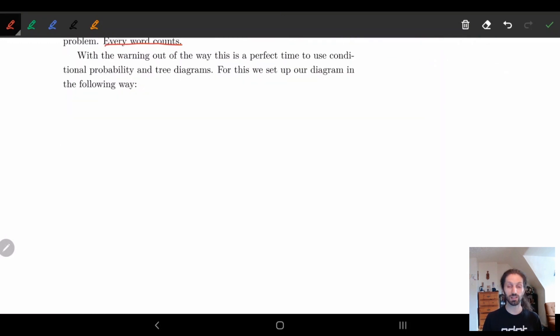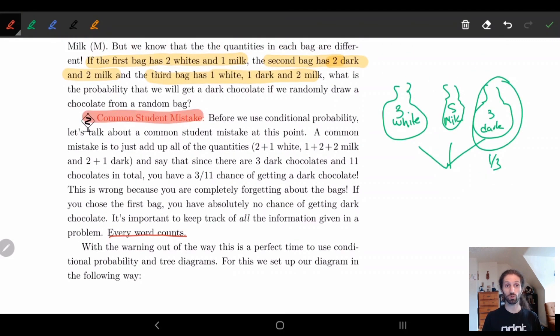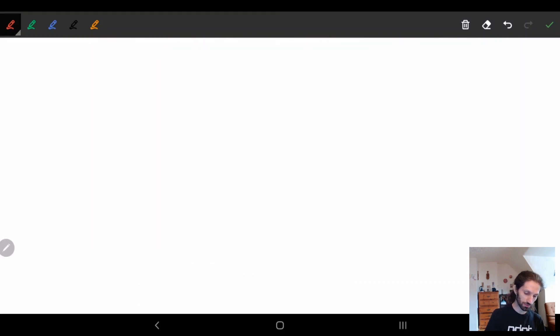Basically what we do is set up the diagram in the following way, and it's actually going to look a little bit like what I did here in the top right corner. So what I do is I'm going to start off with nothing, with a little point, and I'm going to look at the first option I have. The first option I have is I have to randomly choose a bag. So I'm going to draw three different lines, one for each bag: bag one, bag two, and bag three. And I'm going to label each of these lines with the probability that I take that route. So I have a 1/3 chance of going to bag one, a 1/3 chance of going to bag two, and a 1/3 chance of going to bag three.